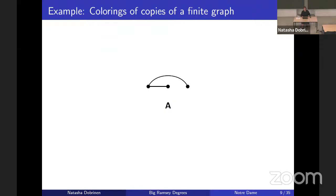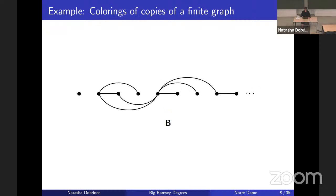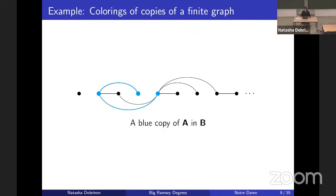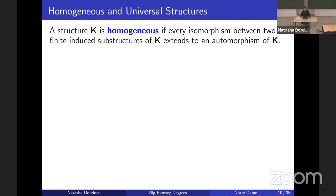Many people in combinatorics are used to coloring vertices or edges, but today we're interested in coloring copies of a fixed graph. If we have a graph A and a graph B, we might be coloring copies of A inside B — maybe one copy is red, another is blue, another red again — and we're looking to find places where we have as few colors for these copies of A as possible.